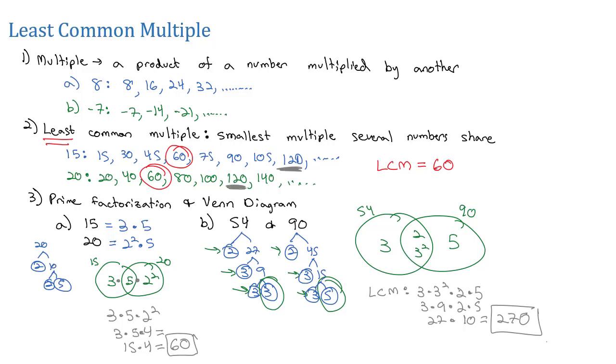So we can find the least common multiple using a Venn diagram, identifying the prime factors they have in common in the middle, all the other factors on the outside, and then just multiply the numbers in the circles together to get the least common multiple.